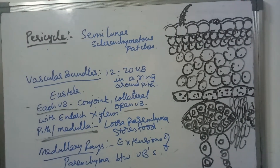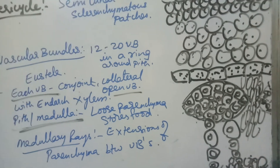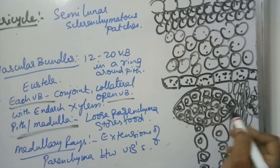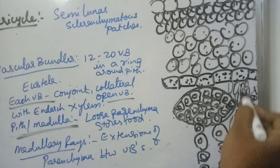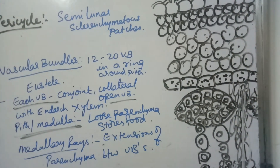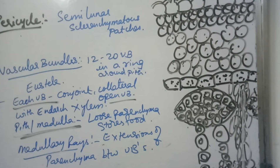Coming to pith or medulla — centrally located, loosely arranged parenchymatous tissue that helps in storage of food material is called pith or medulla. This parenchymatous pith shows extensions in between vascular bundles. These parenchymatous extensions between vascular bundles, and also between sclerenchymatous pericycle patches, are called medullary rays.